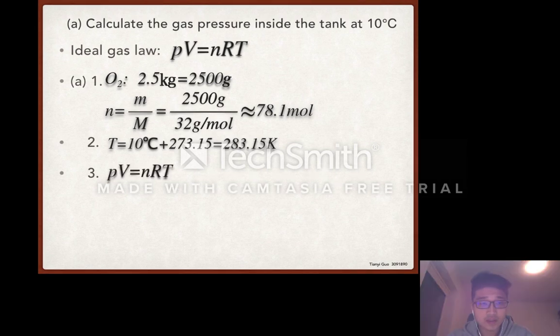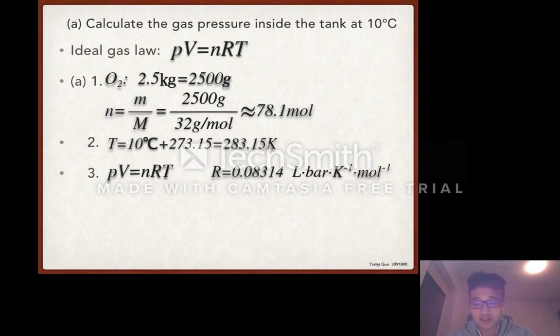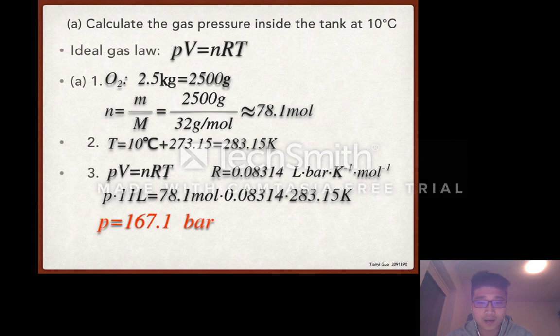Step 3 is the ideal gas law: P multiplied by V is n multiplied by R multiplied by T. R is the gas constant, 0.08314. Now we have everything, we can find P. P is 167.1 bar.